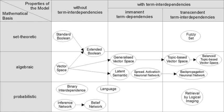Information retrieval is the activity of obtaining information system resources relevant to an information need from a collection. Searches can be based on full-text or other content-based indexing. Information retrieval is the science of searching for information in a document, searching for documents themselves, and also searching for metadata that describe data, and for databases of texts, images or sounds.